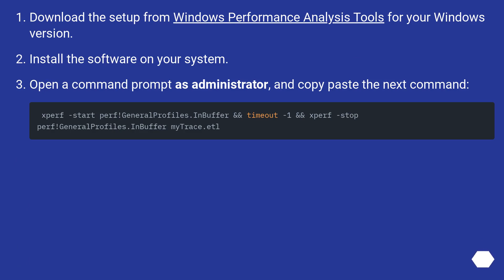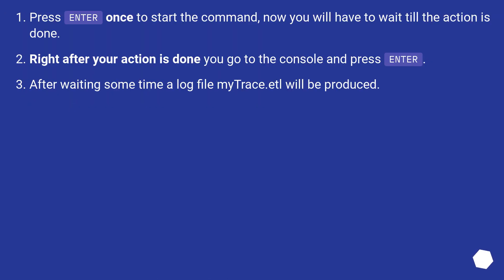Download the setup from Windows Performance Analysis Tools for your Windows version. Install the software on your system. Open a command prompt as administrator and copy-paste the next command. Press Enter once to start the command — now you will have to wait till the action is done. Right after your action is done, go to the console and press Enter.